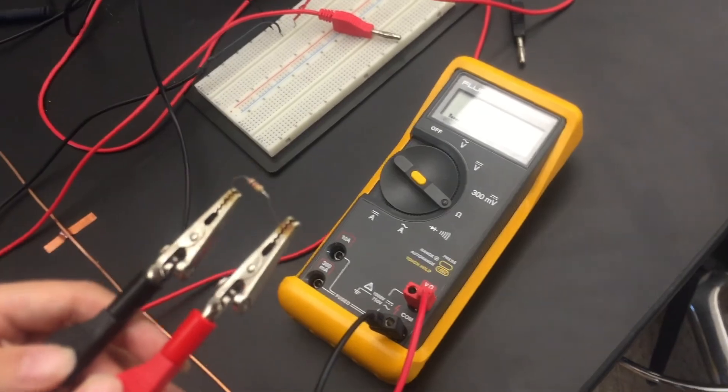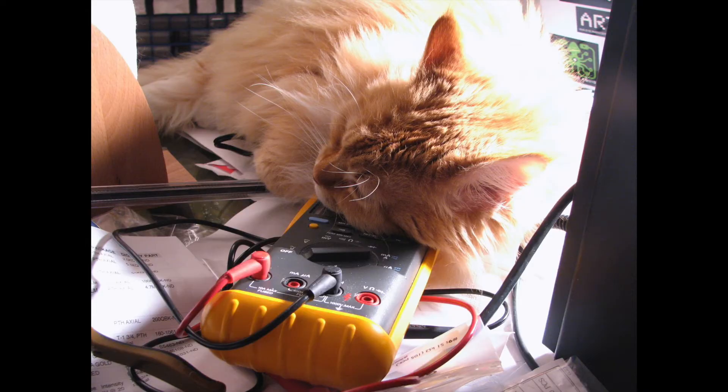The resistance of the multimeter changes depending on the setting, so make sure to attach everything in the correct way. Otherwise there is a huge risk of blowing the fuse in the multimeter.